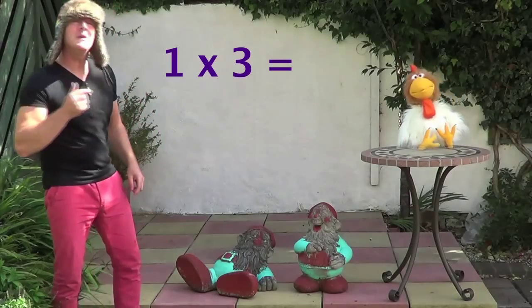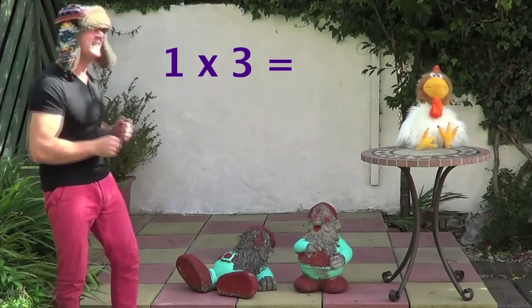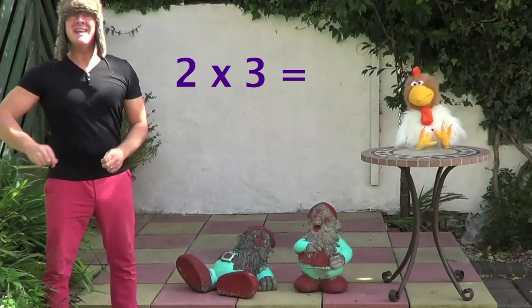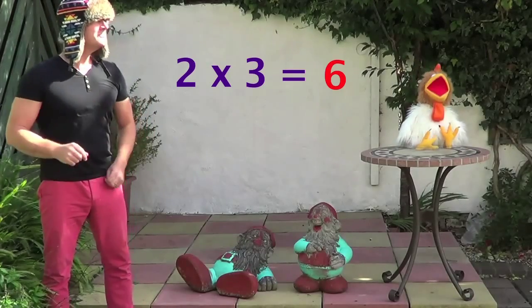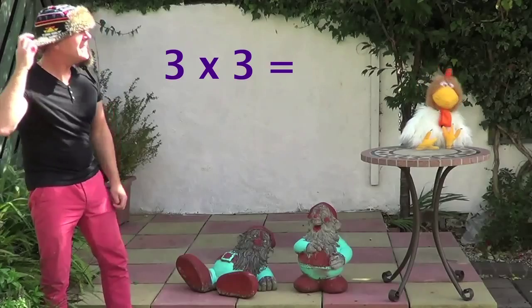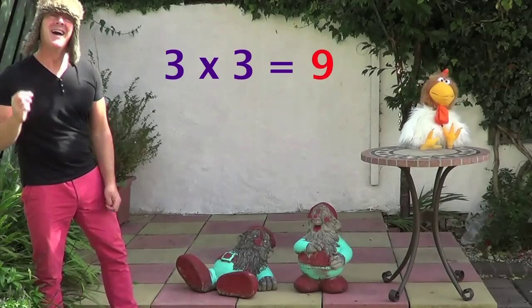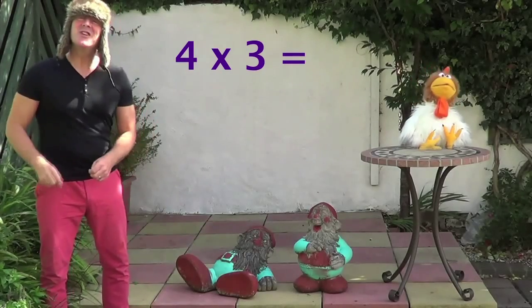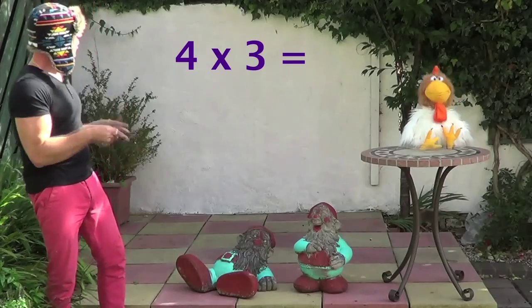1 x 3 is 3, 2 x 3 is 6, 3 x 3 is 9, 4 x 3 is 12